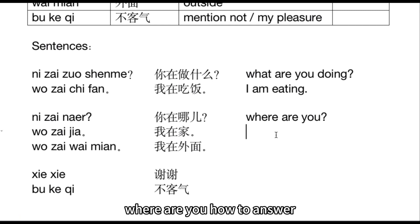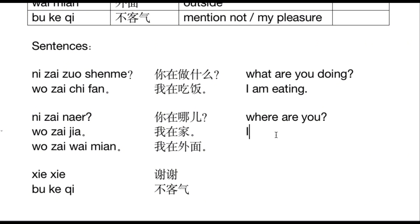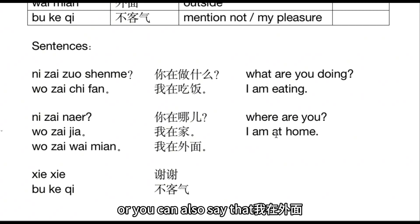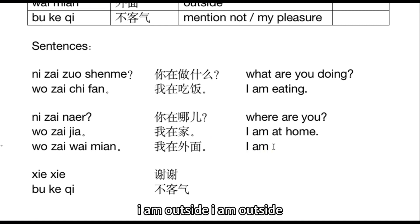The answer to 你在哪儿 is 我在家 — 'I am at home.' Or you can also say 我在外面 — 'I am outside.'